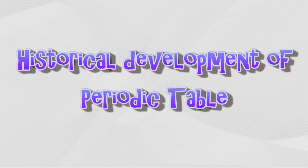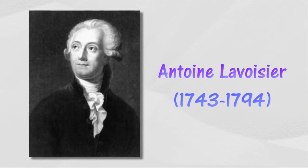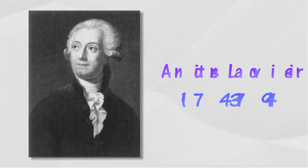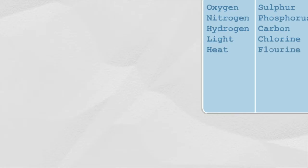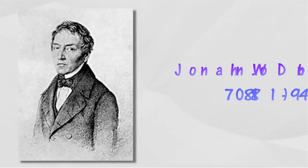The historical development of the periodic table began with Antoine Lavoisier, who wrote the first list containing 33 elements and differentiated metals from non-metals. He classified elements into four groups, including light and heat as elements.